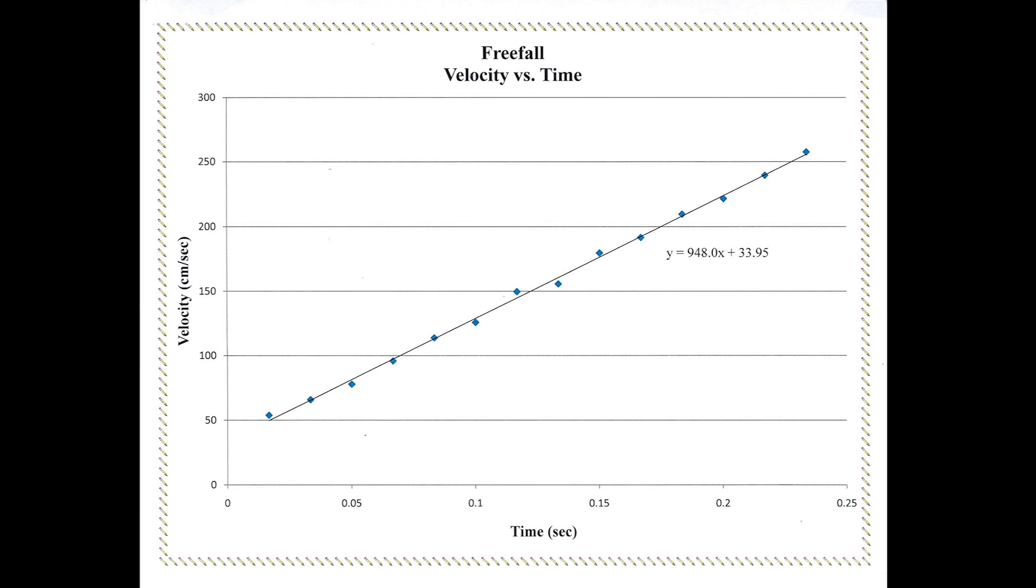Once we have created our axes, we can now plot our data. Chances are, the data points will not fall on a straight line. Some will likely be above, and some will be below. However, we will draw a trend line, which is a straight line demonstrating the general trend in our data points. We want to create a trend line that has an equal amount of data points above as below. It should look something like this.